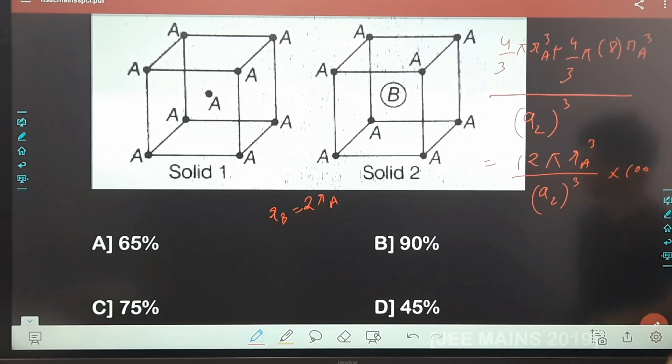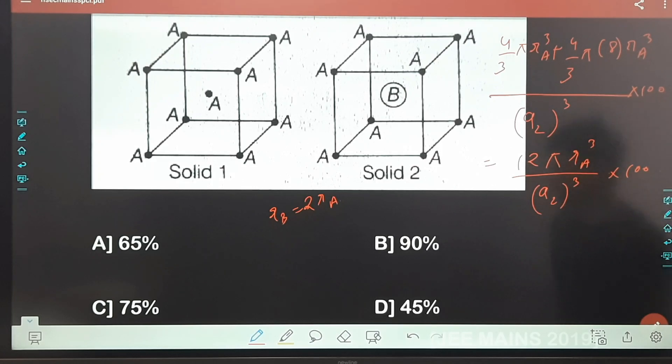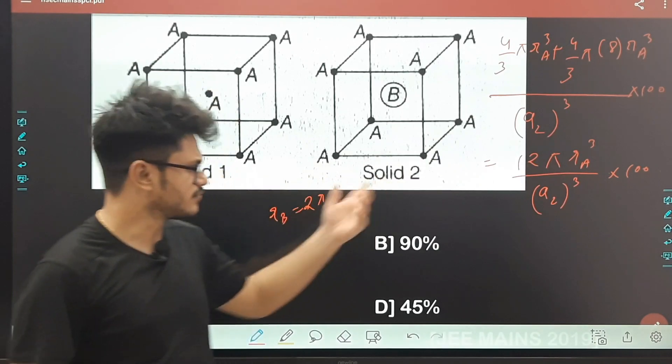Fir isko aap 100 se multiply kar dena to percentage mein aa jayegi cheezein. Percentage pooch raha hai to wo aap isko kijiye. Now we need a₂ in terms of rₐ. Bas wo chahiye apne ko, koi badi baat nahi.